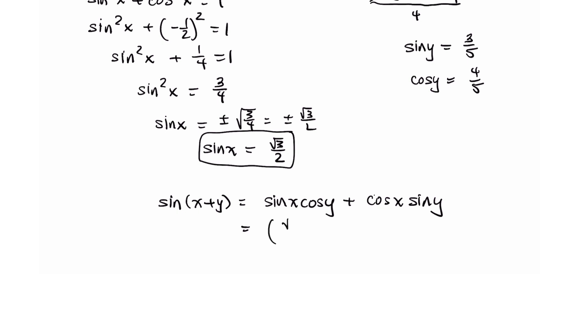So sine of x is square root three over two. Cosine y is four-fifths. Cosine x was given as negative one-half. Sine y is three-fifths.